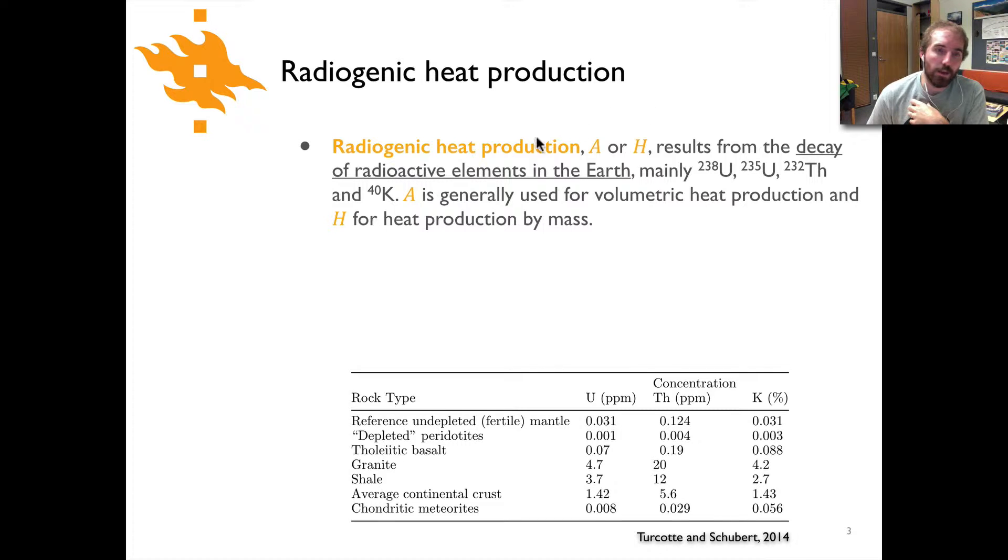The letter A is typically used when you're referring to volumetric heat production, so for a certain amount of heat produced per given volume. That's typically given in microwatts per cubic meter. And H would be the value for heat production by mass, which could be given in watts per kilogram.